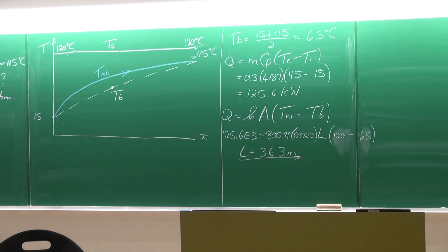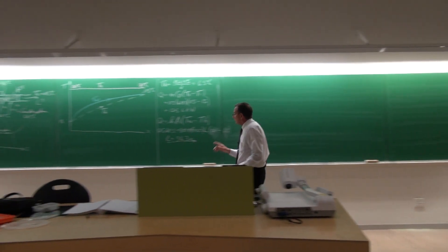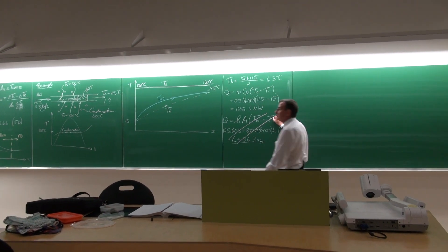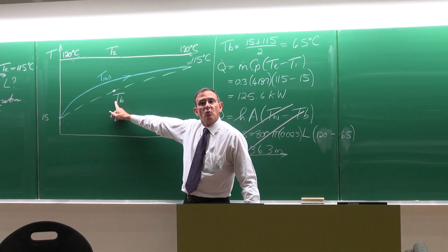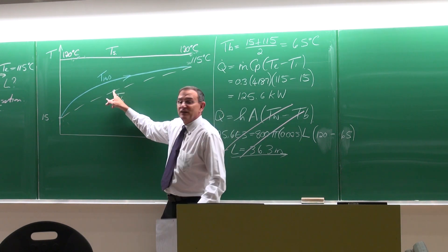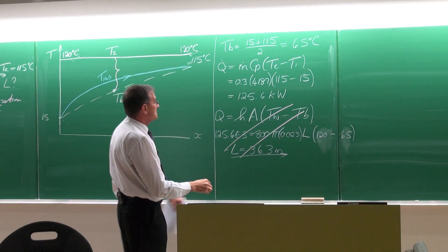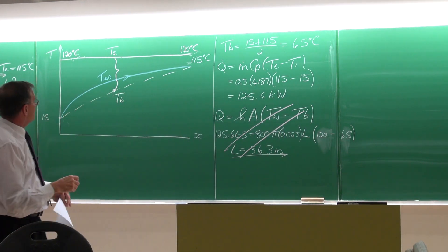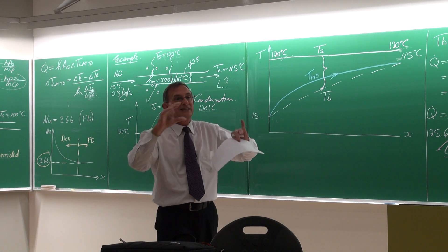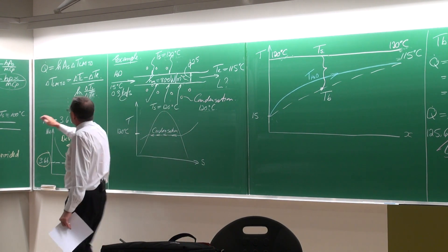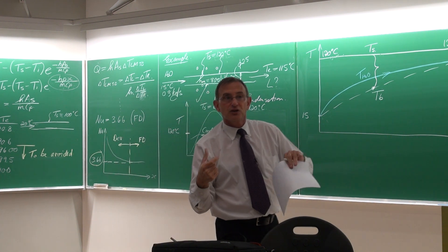A student asks: can you use the LMTD? Yes — and in fact you should. This calculation using a simple bulk temperature difference is incorrect because the average temperature distribution is not simply TS minus T-bulk. The LMTD accounts for the exponential temperature profile by integrating the e to the minus NTU term, giving a much more accurate description of the actual temperature distribution.